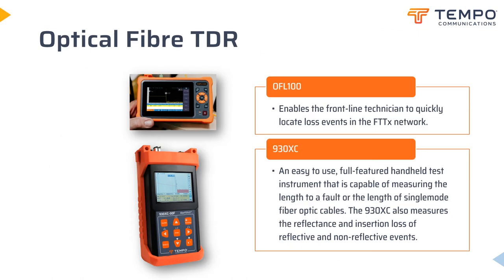Tempo offers a range of optical TDRs, sometimes abbreviated to OTDR. The 930XC is suitable for technicians working in the trunk and distribution network. While the almost pocket-sized unit, the OFL100, is ideal for technicians working more often on the distribution side of fibre-to-the-X networks that are currently being installed. Some call these last-mile OTDRs, but Tempo's OFL can see far more than one mile, though it has lower dynamic range than the larger device.